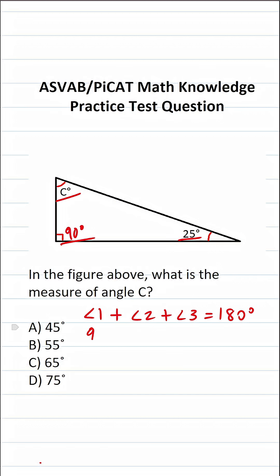In this case, we know one of the angles is 90 degrees. We know one of the other angles is 25 degrees. We want to solve for angle C, which is unknown, so I'll call it X.